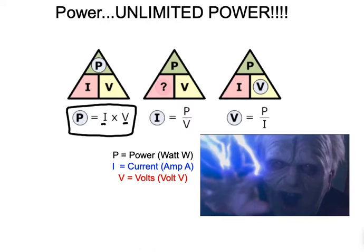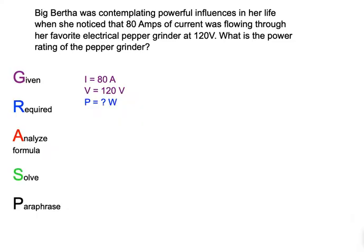Let's go over a simple example of how to calculate power. Big Bertha was contemplating powerful influences in her life when she noticed that 80 amps of current was flowing through her favorite electrical pepper grinder at 120 volts. What is the power rating of the pepper grinder? Now, whether it's a pepper grinder or electrical toilet or Big Bertha or Harry Dan, it doesn't matter.